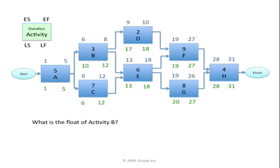The float of activity B is the flexibility of activity B — how much flexibility it has between its early and late numbers. Float equals the late finish of activity B, which is day 12, minus the early finish of activity B, which is day 8: 12 minus 8 equals 4 days. This means B may slip up to 4 days from its early numbers before it would affect the critical path or the project duration of 31 days.